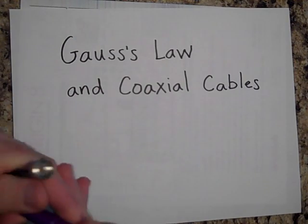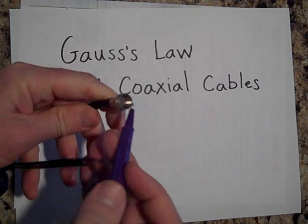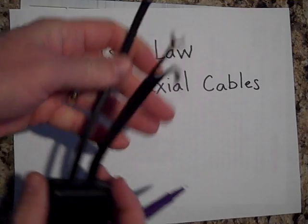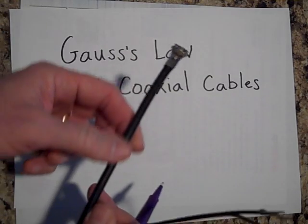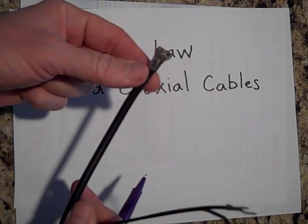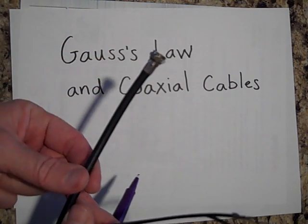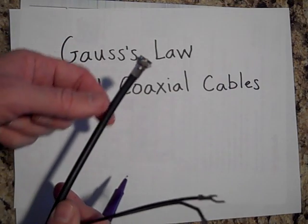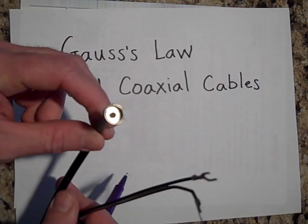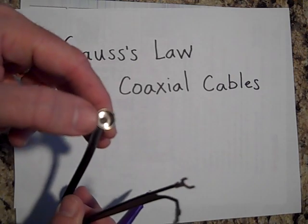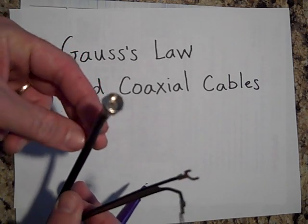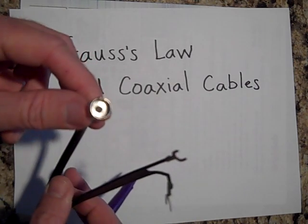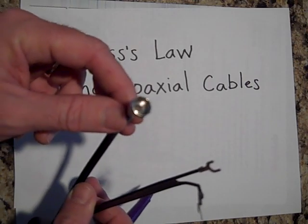It's so small, but there's a wire coming in here, a wire that runs through the center, and then there's another cylindrical wire that goes around the edge. You can run current up and down here, or charge it up and look at the fields. We're going to say there's air between the center wire and the outer wire.